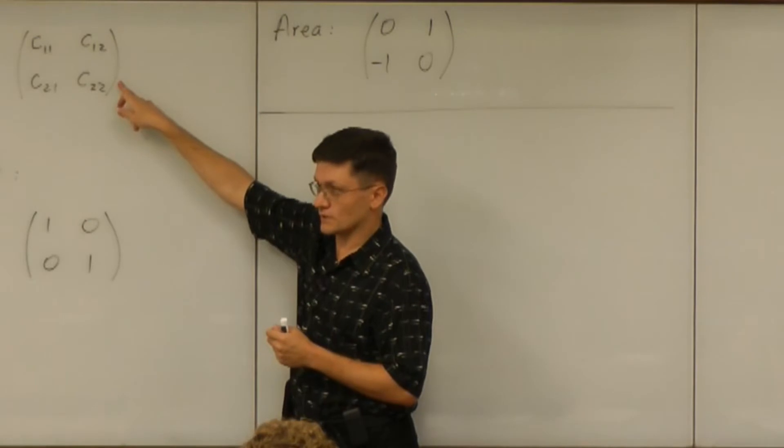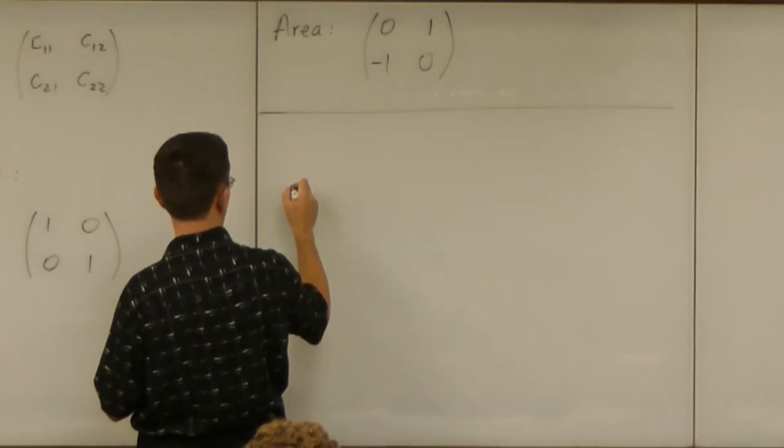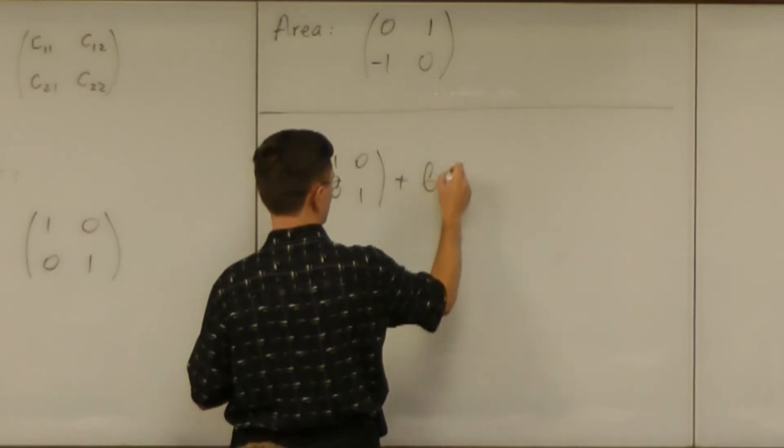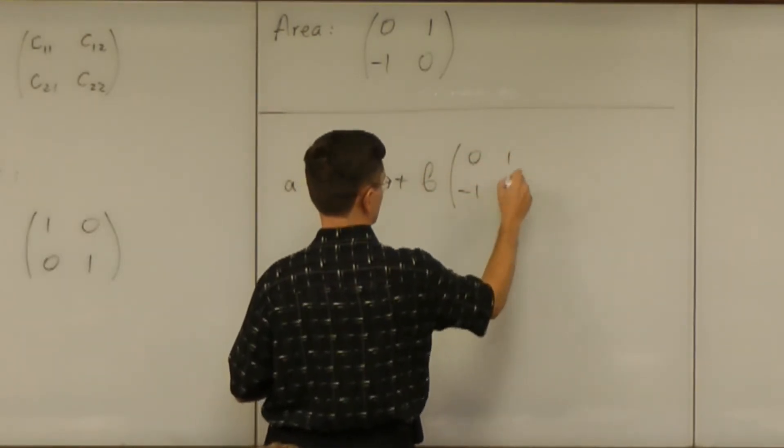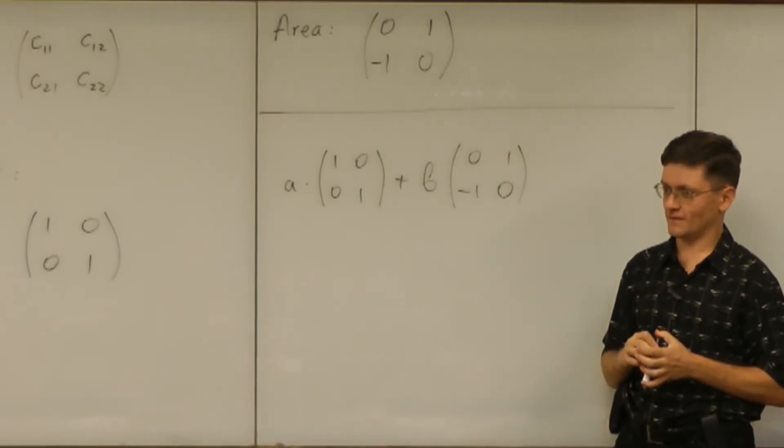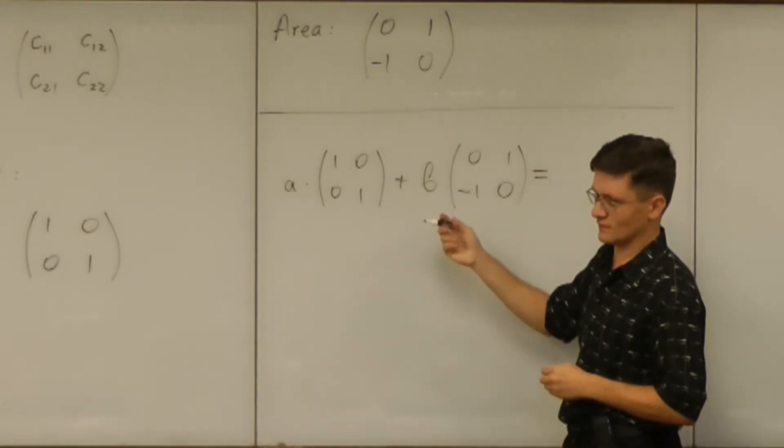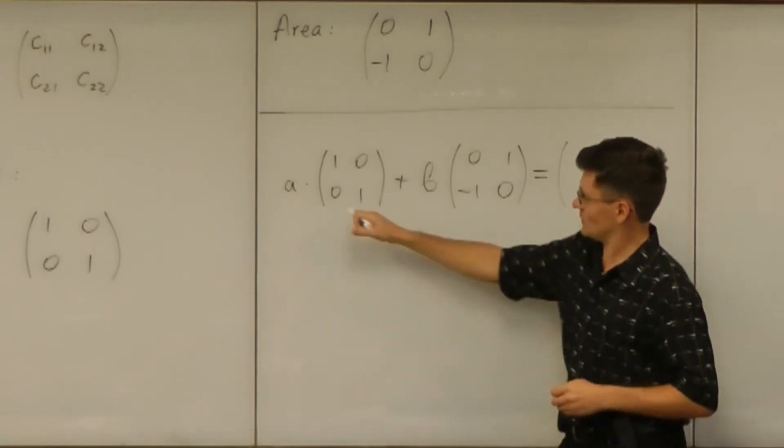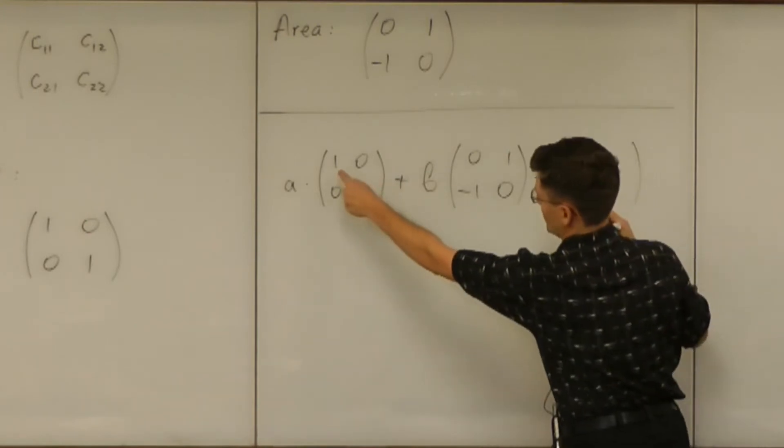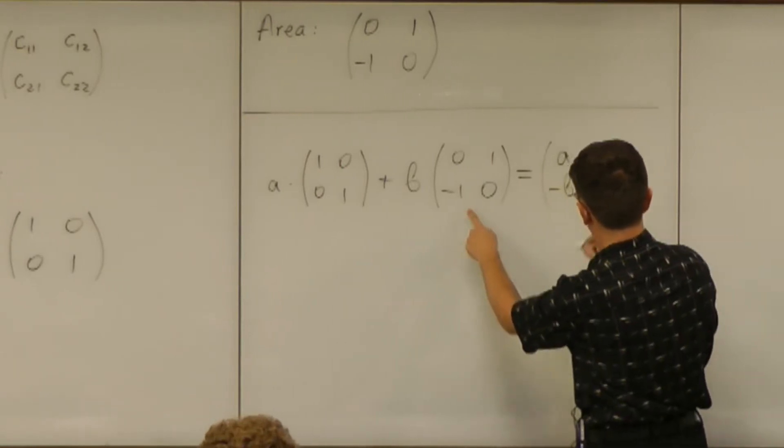Now, can you get any matrix like this as a combination? Some number A times (1, 0, 0, 1) plus some number B times (0, 1, -1, 0)? No. No? Why not? What if you wanted that? Yeah, because it would have to have a different sign. So, if you assemble this in one matrix, you have A, A, and then B, minus B. Yes. It probably doesn't cover everything.